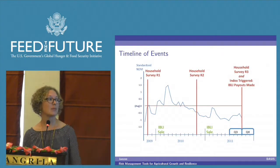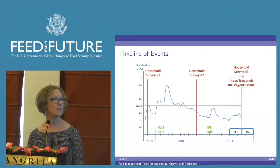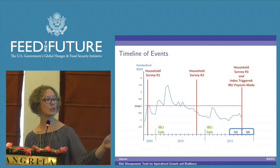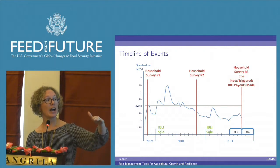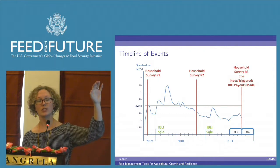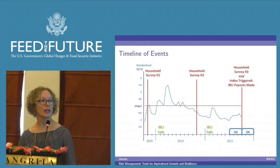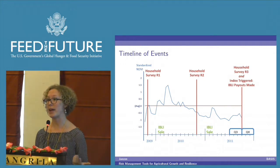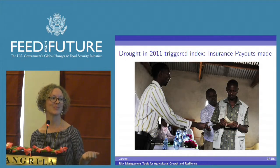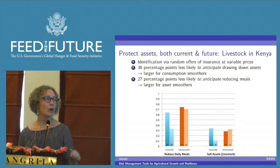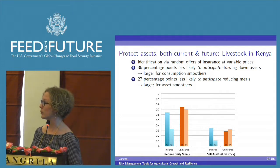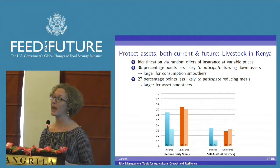A brief timeline of evidence: this line represents the NDVI over time starting in 2009 to 2011. In 2009–2010 we had above-average conditions, then for about a year the conditions fell below average, triggering the index and resulting in payouts being made. With that payout, insured households were actually better able to smooth both their income and their assets.